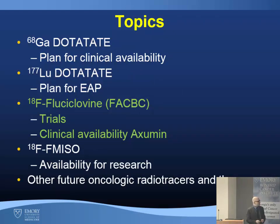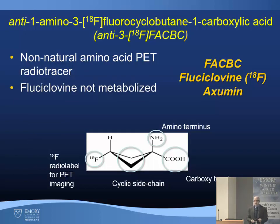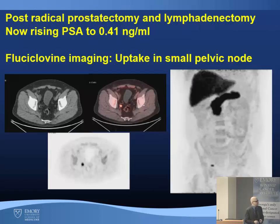Moving on, I'll be talking about a radiotracer that many of you know: fluciclovine or FACBC. FACBC, also known as fluciclovine or by the trade name Axumin, is a non-natural amino acid PET radiotracer. Unlike natural amino acids, fluciclovine is not metabolized, which is actually an advantage in imaging. In a patient post-radical prostatectomy with rising PSA to 0.41, with fluciclovine we saw uptake in a subcentimeter right pelvic node that was biopsy-proven to be prostate cancer.